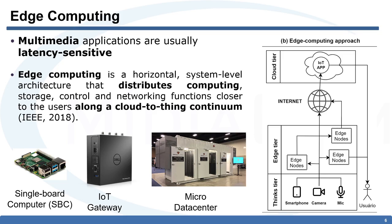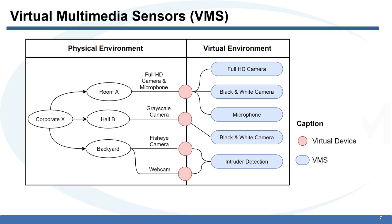If we use the cloud as this middle layer, we can have problems with latency because the data needs to travel from the device to the cloud and back to the user. Many times the user is near the device that produces the stream. One strategy to solve this problem is using edge computing, which is a horizontal system-level architecture that distributes computing over the continuum from the thing to the cloud. Edge nodes can have many different capabilities in terms of CPU, memory, and storage. Because of that, we use edge computing to virtualize our multimedia sensors.